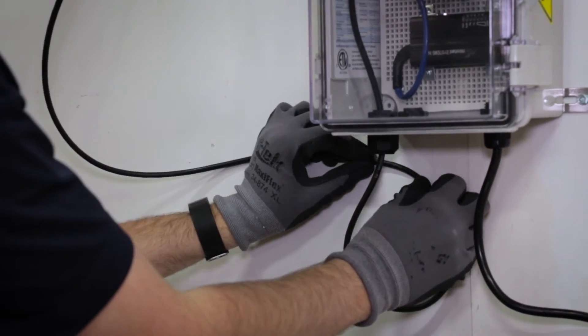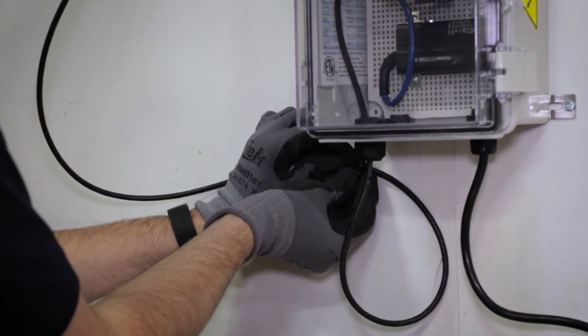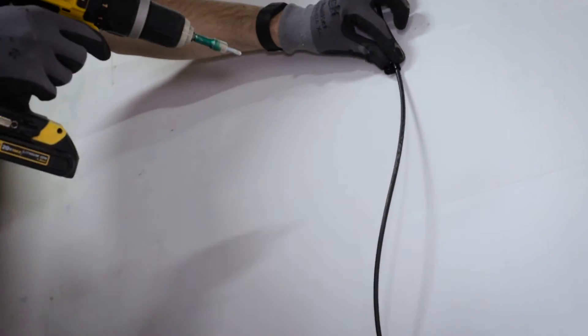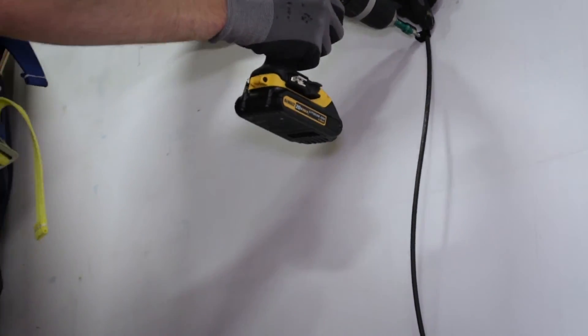Secure the Ethernet cable in place with another drip loop using the P-clips that are supplied. Use remaining P-clips to secure the Ethernet cable to the surface between the Gateway Node and PowerPanel box at four foot or one and a quarter meter intervals.